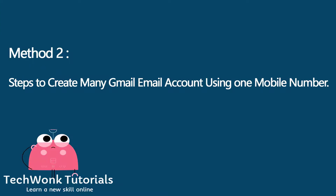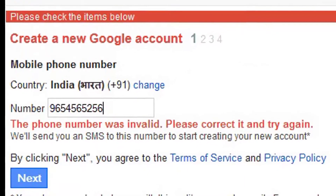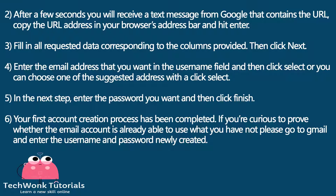Method 2. Steps to create a Gmail account using one mobile number. First open your browser and type this address in the address bar and hit enter: https://accounts.google.com/signup/mobile. Enter the phone number in the mobile column without the leading zero, then click next. After a few seconds you will receive a text message from Google containing a URL. Copy the URL address into your browser's address bar and hit enter.